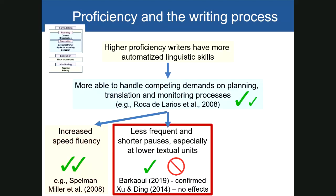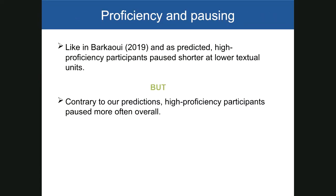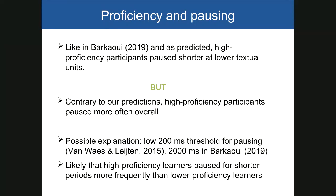We also predicted increased speed fluency for higher proficiency participants, and we did find confirmation. Proficiency had the strongest relationship to writing fluency, explaining 30 percent of variance in scores, confirming findings from previous research. When it comes to pausing, our results were mixed, similar to previous research. As predicted, high proficiency participants paused for shorter periods at lower textual units. Contrary to our predictions, however, higher proficiency participants paused more often overall. A possible explanation is that we had a relatively low pause threshold of 200 milliseconds — high proficiency learners may pause for shorter periods more frequently than lower proficiency learners.